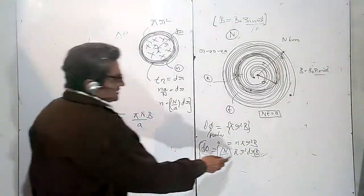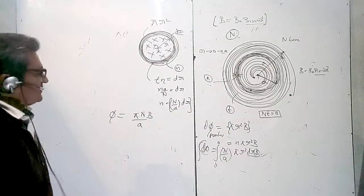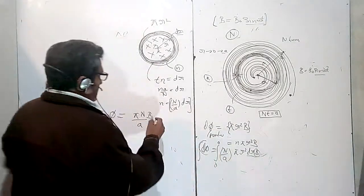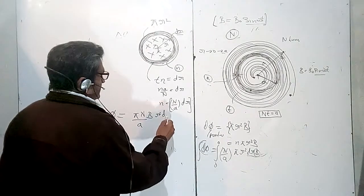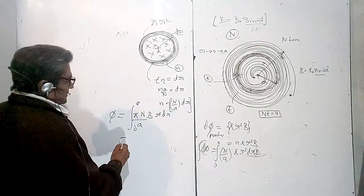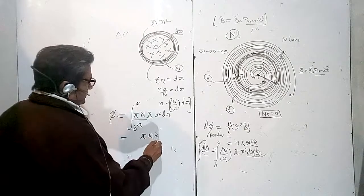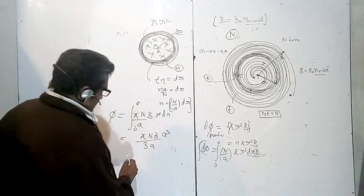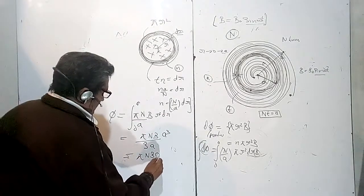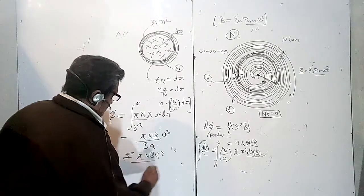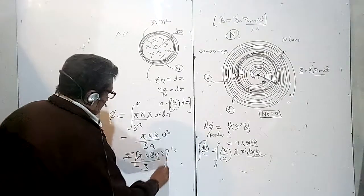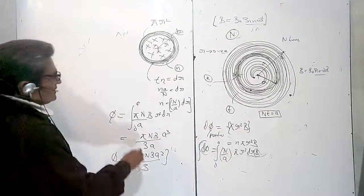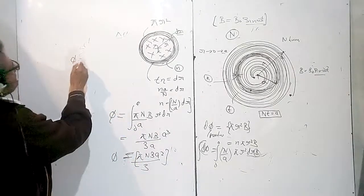πN upon A into B, where B is not a function of R, so πN upon A R² dR from 0 to A. It becomes πNB upon 3A into A³, which is πNBA² upon 3. This is my total flux.